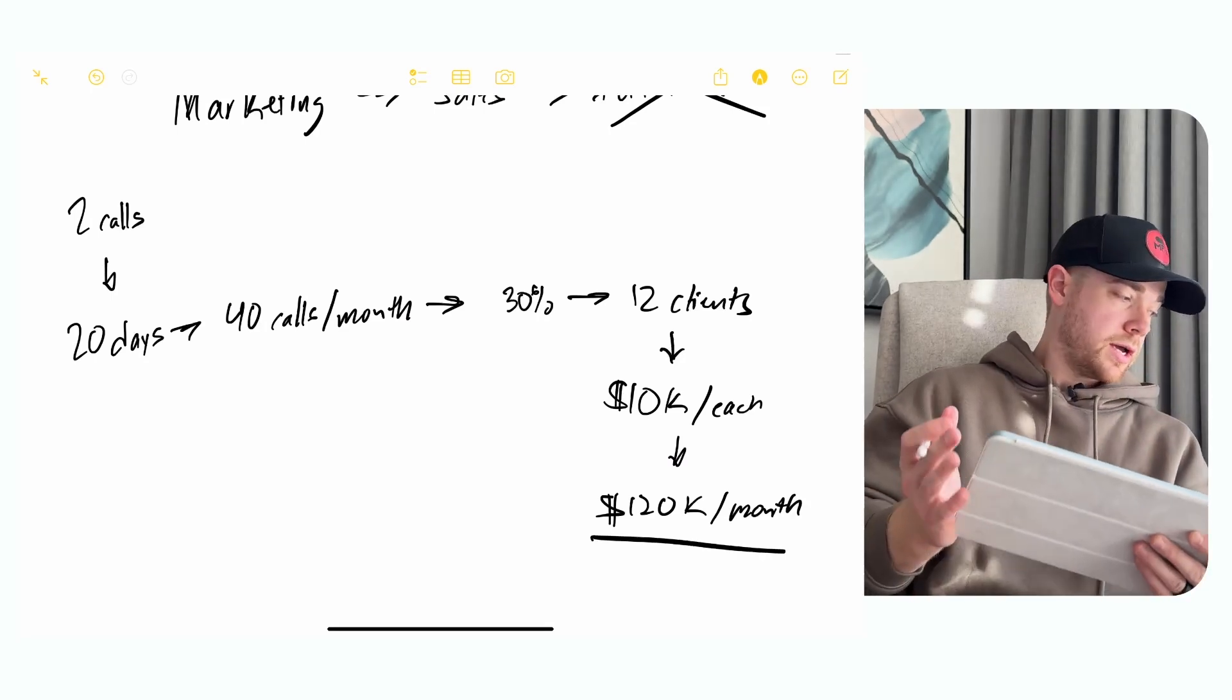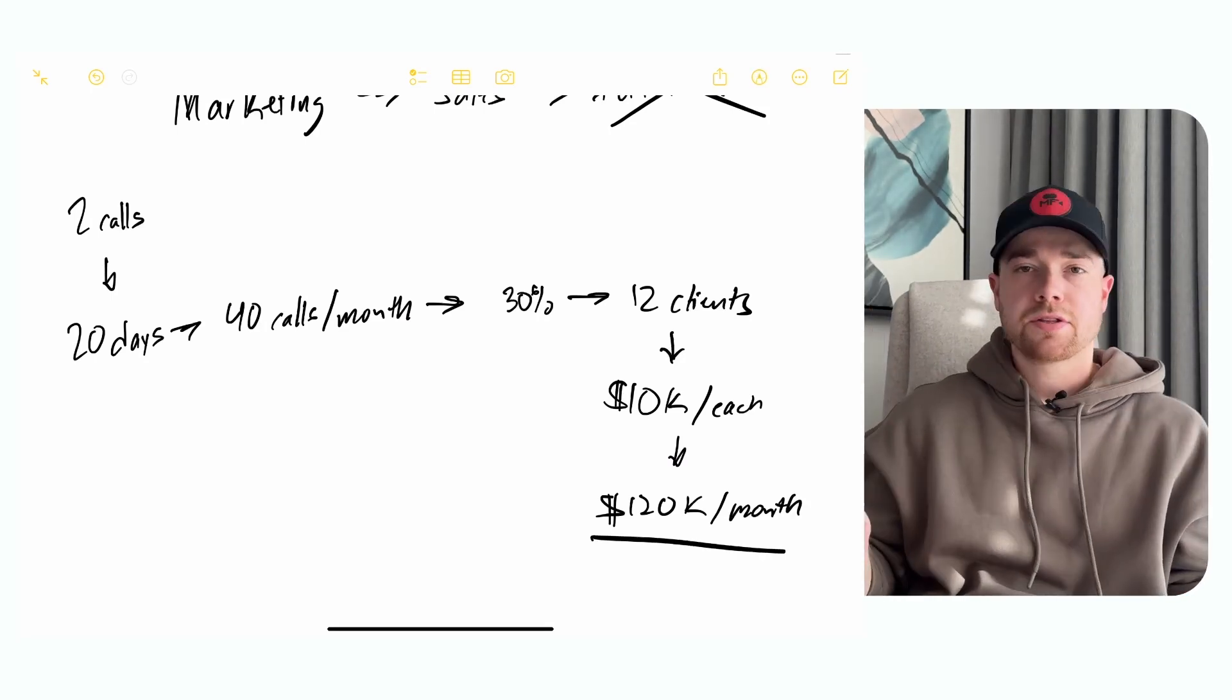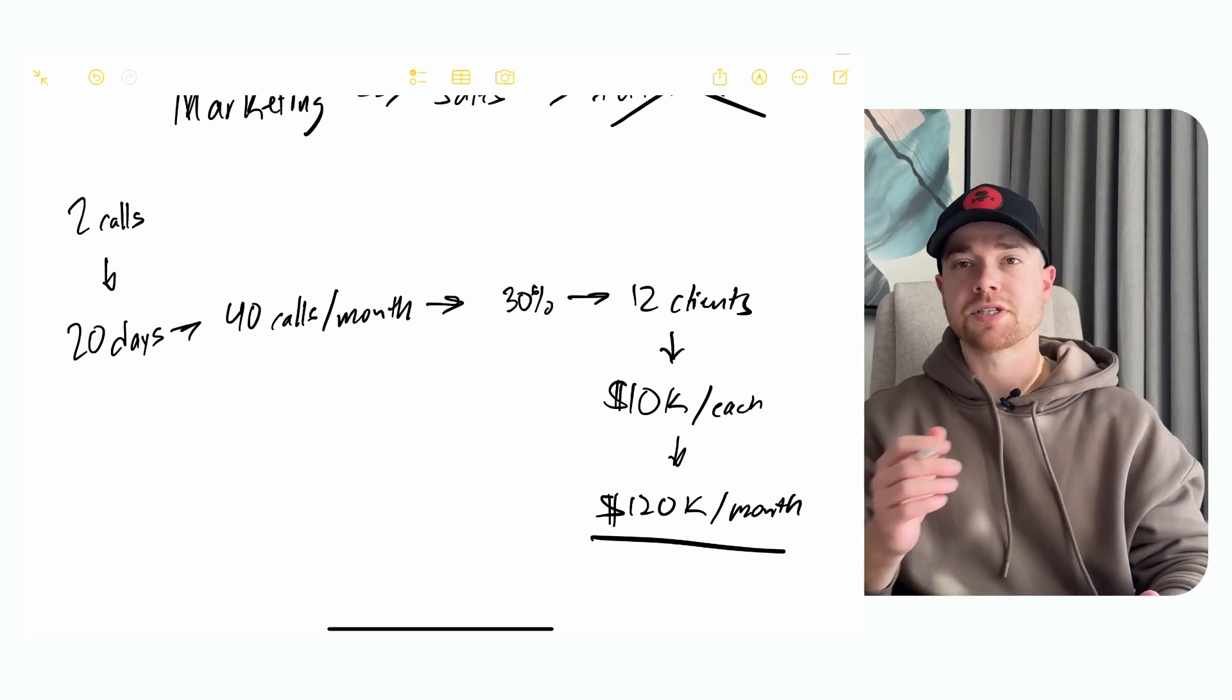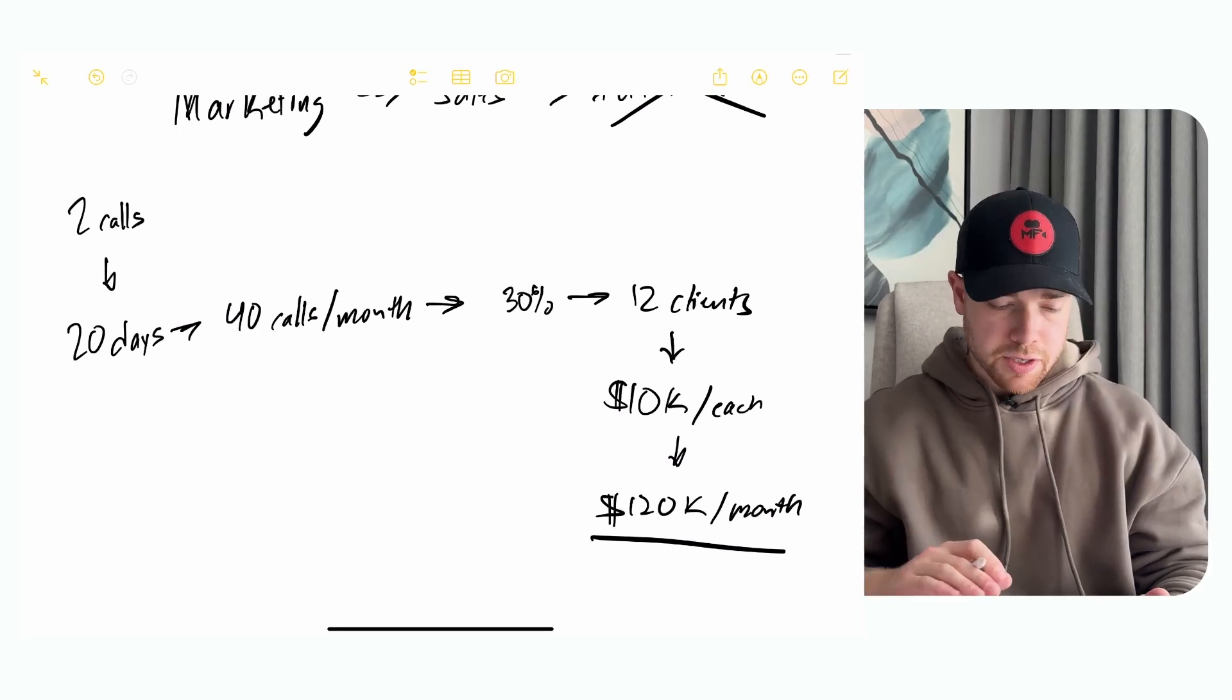And if I can close 12 clients at 10K each, then that equals 120K right here. Simple math. And so it just boils down to math.